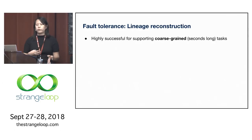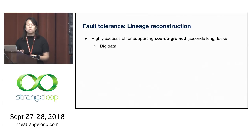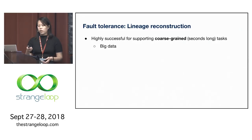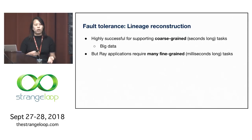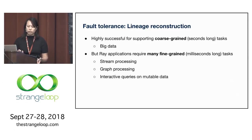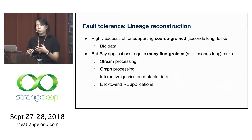Lineage reconstruction techniques have been really successful for applications with coarse-grained tasks—tasks running on the order of seconds, like big data processing systems such as Spark or Hadoop, where high throughput matters more than per-task latency. But for the applications we're targeting, we're looking at a high throughput of many fine-grained tasks running on the order of milliseconds, including stream processing, graph processing, interactive queries, and end-to-end reinforcement learning applications.